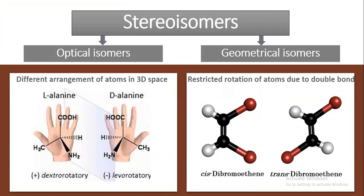Stereoisomers are of two types: optical isomers and geometrical isomers. Optical isomers have different arrangement of atoms in three-dimensional space. Here we have shown an example of alanine, in which different arrangement of atoms in three dimensions is shown by the wedge and dash model, which makes them a pair of enantiomers — mirror images of each other. Geometrical isomers are produced due to restricted rotation of atoms due to a double bond, giving rise to cis and trans geometrical isomers.